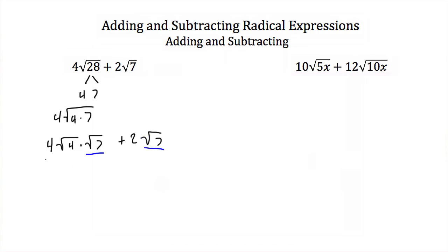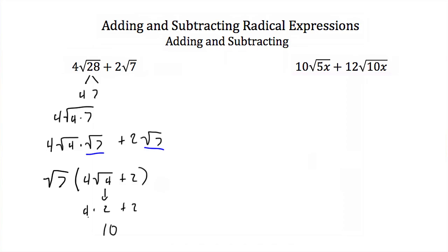Factoring out the square root of 7, I have square root of 7 times the quantity 4 square roots of 4 plus 2. The square root of 4 is 2, so I have 4 times 2 plus 2. That's 8 plus 2, which is 10. I end up with 10 square roots of 7. So to add these, I had to simplify one term to get the same like radical.